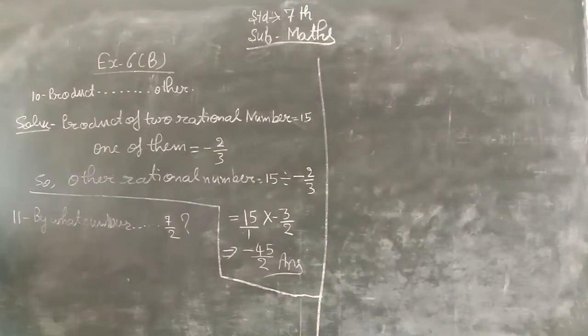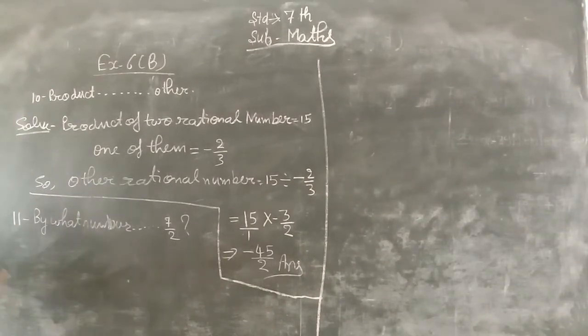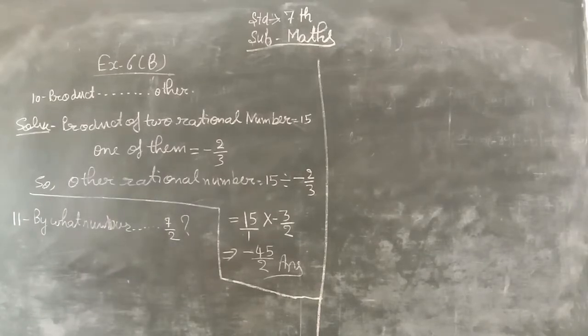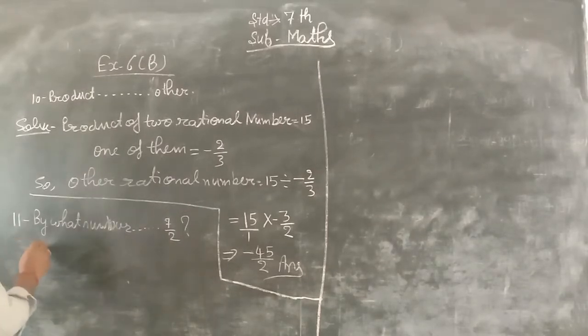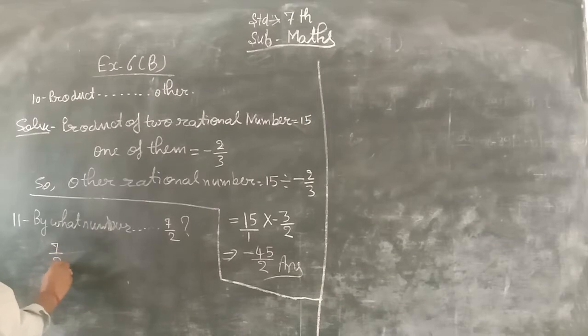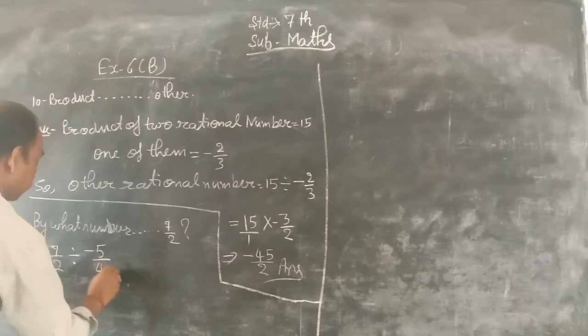Question 11: By what number should we multiply minus 5 upon 4 to get 7 upon 2? So the number we have to find is 7 upon 2 divided by minus 5 upon 4.